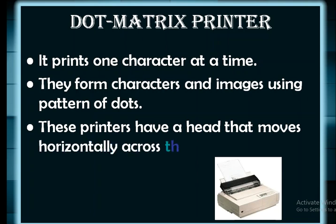The dot matrix printer has a head that moves horizontally across the paper. When one character is printed, the next character is printed, and so on — moving from one side to the other. When one line is printed, it comes back to the next line and starts printing again one character at a time. These are quite slow in speed and were used in earlier days.